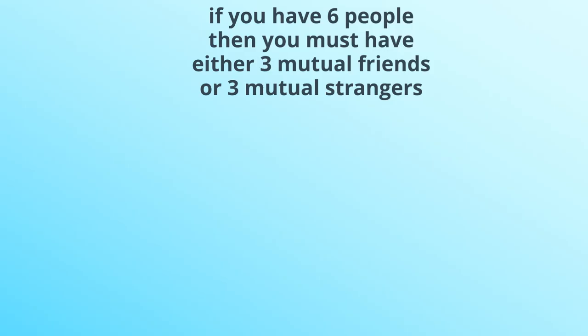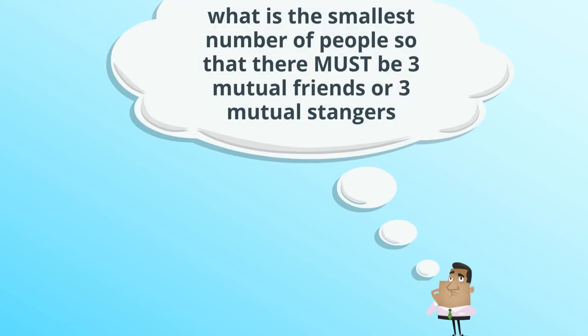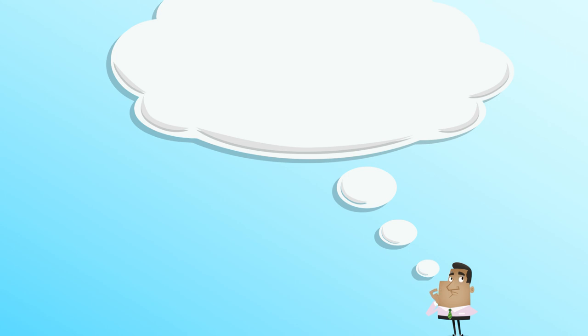So welcome back to those that missed the proof. What we showed is that if you have six people, then you must have either three mutual friends or three mutual strangers. So we're now able to answer the question we posed at the start of the video. So here's the question, and the answer is six.